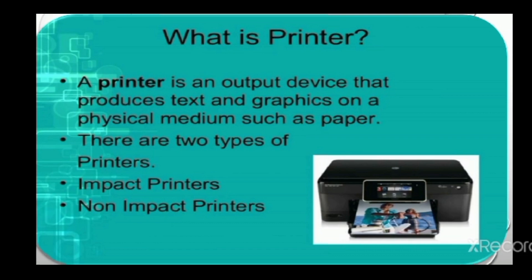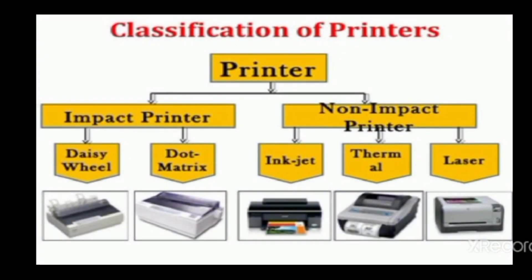There are two types of printers: impact printers and non-impact printers. Examples of impact printers are daisy wheel printer and dot matrix printer. Examples of non-impact printers are inkjet printer, thermal printer, and laser printer.